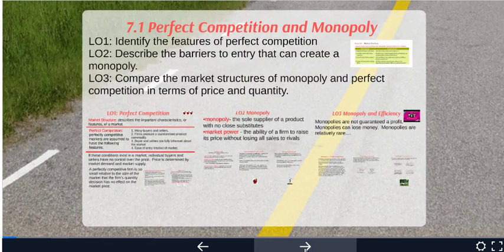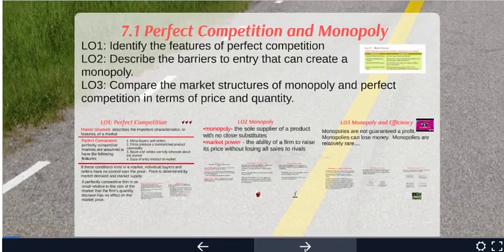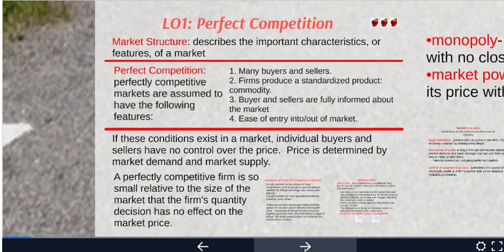First, perfect competition and monopoly. We're going to identify the features of perfect competition, describe the barriers to entry that can create a monopoly, and then compare the market structures of monopoly and perfect competition in terms of price and quantity. The term market structure describes the important characteristics or features of a market.